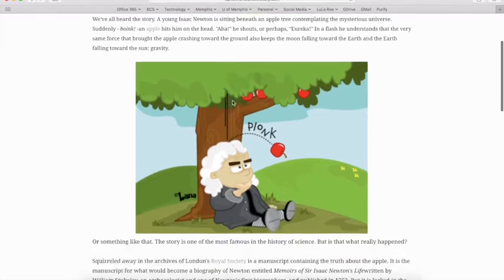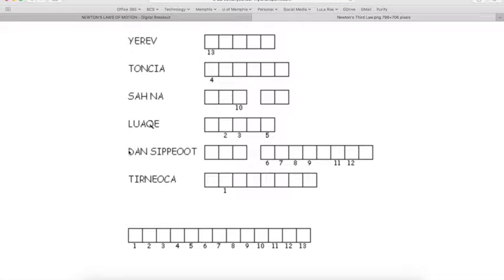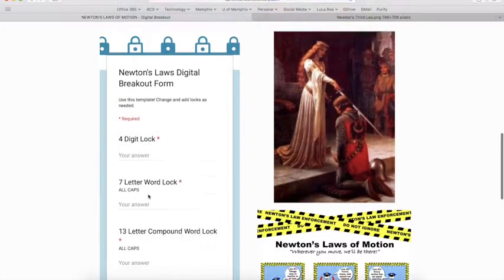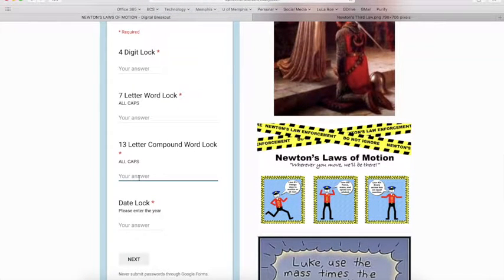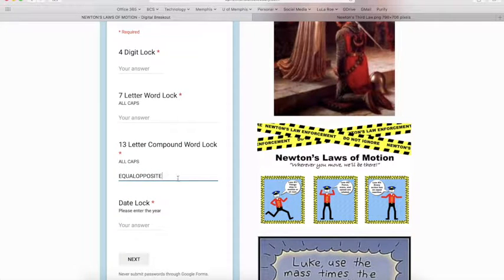The ones that are used in the puzzle are C. This one here takes them to a word scramble and when they unscramble it says every action has an equal and opposite reaction and this word here will be equal opposite and that will be the clue here for the 13 letter compound word. So equal opposite and you see that it turns kind of just blank here and that means that they have actually solved and been able to open that lock.